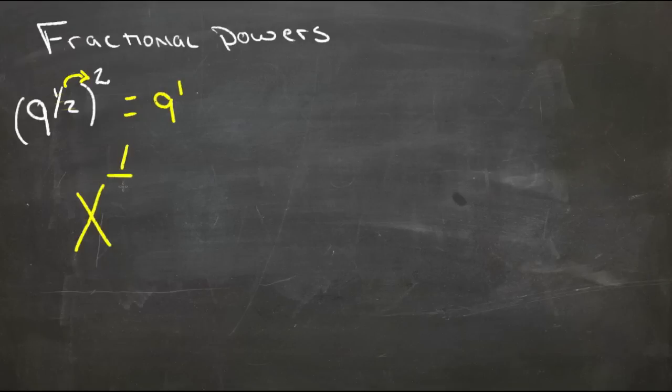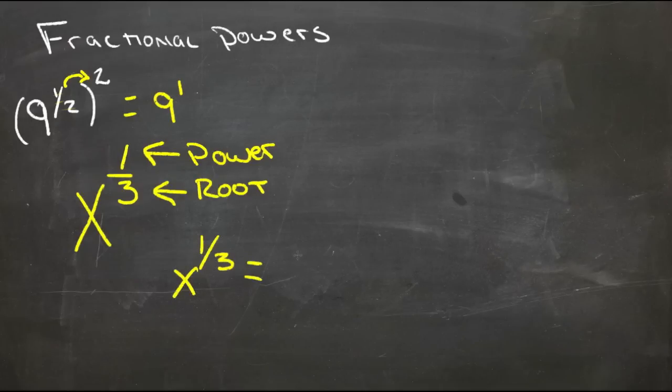So in this case we have x to the one-half. x to the one-third would be the same as x to the first and then the cubed root or the third root of that, the number times itself times itself that equals x to the first.